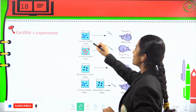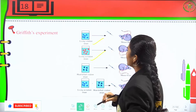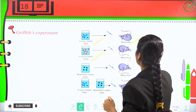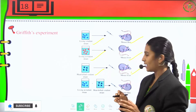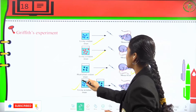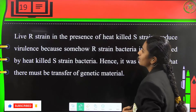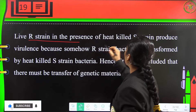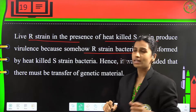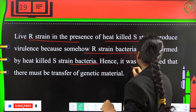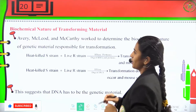Griffith injected the living virulent S-strain into a mouse — the mouse died. He injected the non-virulent R-strain — the mouse survived. He heat-killed the virulent S-strain and injected it — the mouse was still alive. However, live R-strain in the presence of heat-killed S-strain produced virulence, because the R-strain bacteria were transformed by heat-killed S-strain bacteria. It was concluded that there must be a transfer of some genetic material.